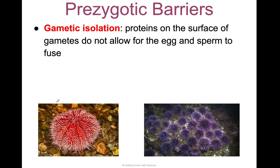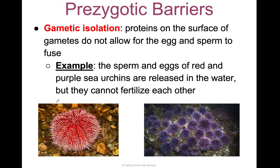Gametic isolation is when proteins on the surface of sperm do not allow the egg and sperm to fuse together. In humans, the sperm has an acrosome at the top that releases enzymes to eat through the egg and fertilize it — if you don't have those proteins on the surface of your gametes, it just won't fuse. For example, the sperm and eggs of red and purple sea urchins are released into the water, but they can't fertilize each other because they don't have the right gametes.